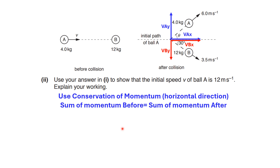The next question asks to show that the speed V of ball A is 12 meters per second. Note that sometimes I say velocity and speed, which is okay. We are going to use the conservation of momentum this time in the horizontal direction, which means the sum of momentum before is equal to the sum of momentum after collision.